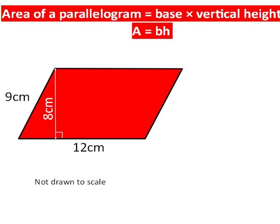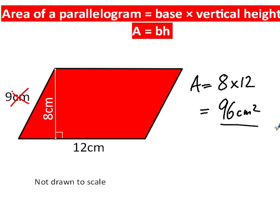A worked example then. The area of a parallelogram equals base times vertical height. So I've put in this extra information there just to confuse matters. It's eight times twelve that we need to do. Area equals eight times twelve, which equals ninety-six square centimeters.